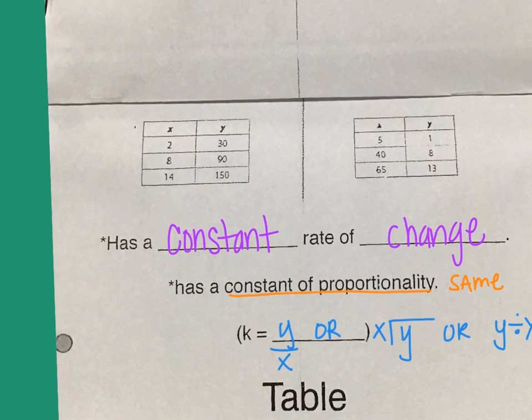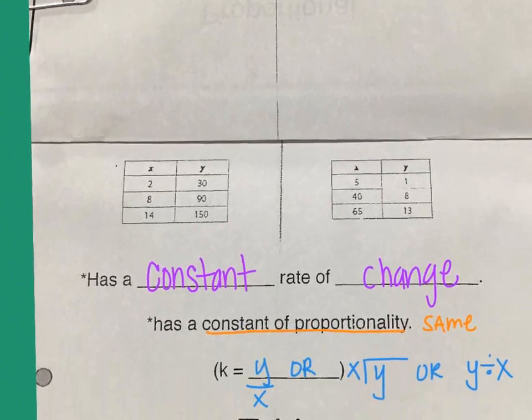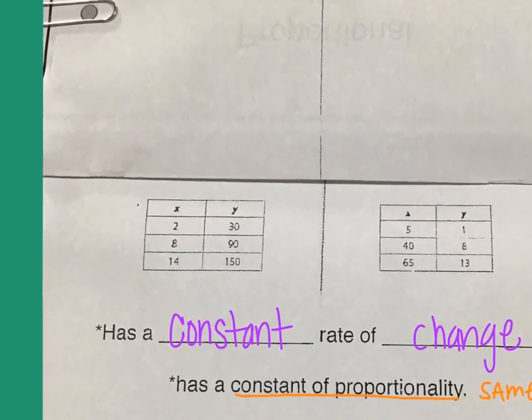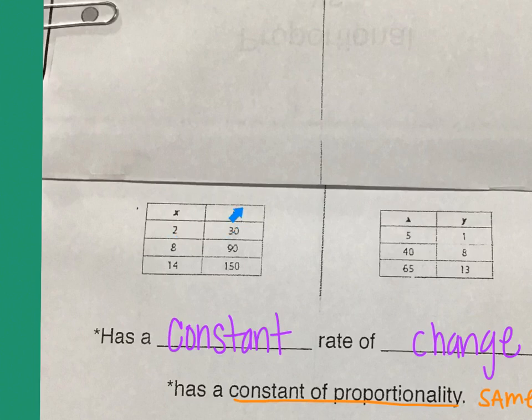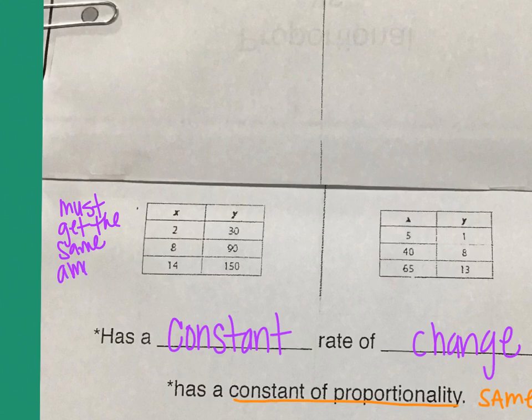I'm going to scoot up to this first table, and what we're looking for is every row in the table, when I take the y number and I divide it by the x number, I need to get the same answer every time. I must get the same amount when I do y divided by x.